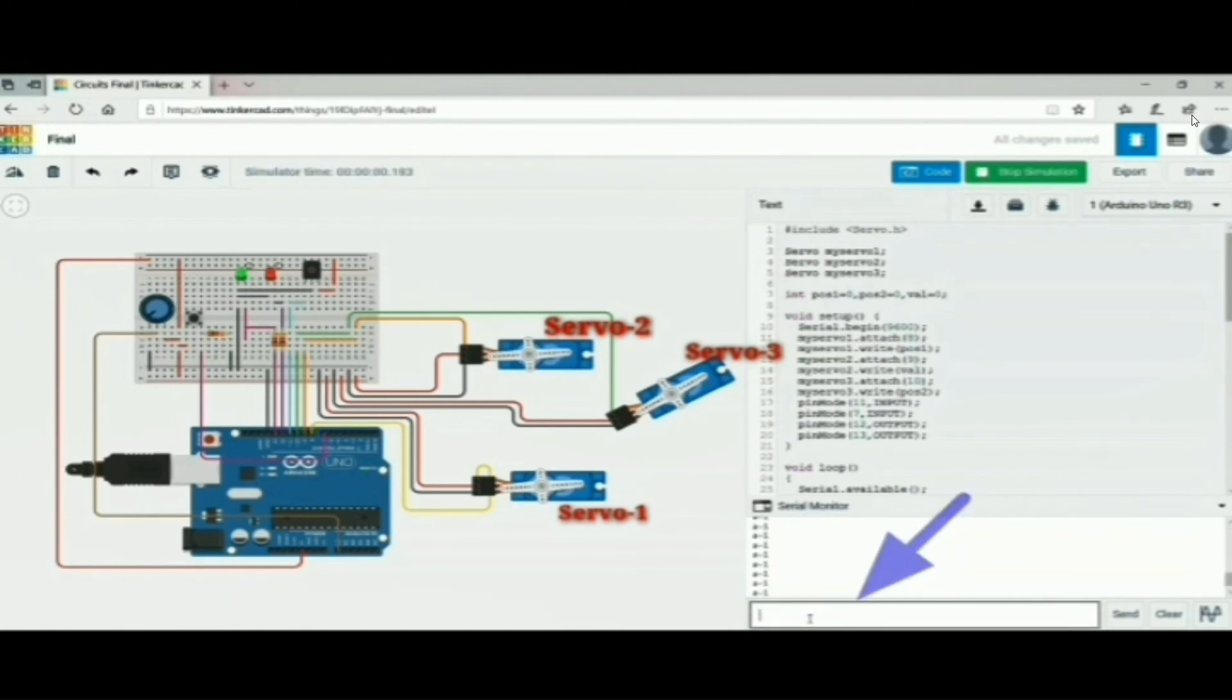The IR sensor input is taken from serial monitor. Both LEDs are glowing indicates that the machine is on and there is an absence of ball. If we enter one in the serial monitor that is presence of ball.